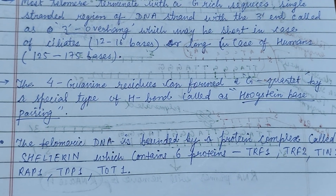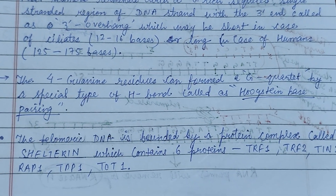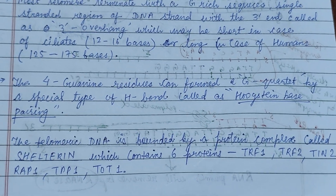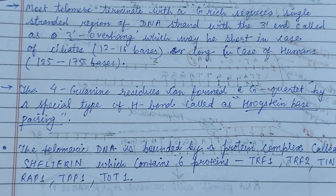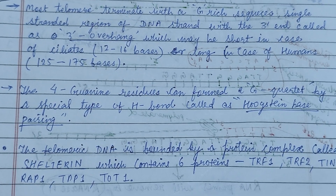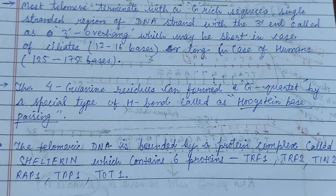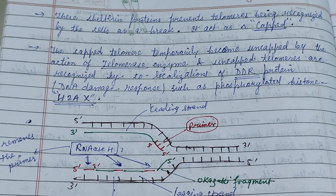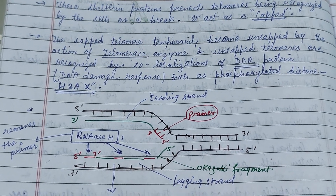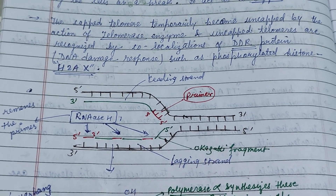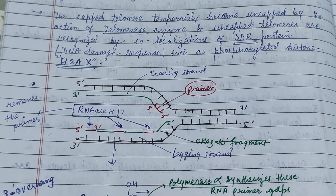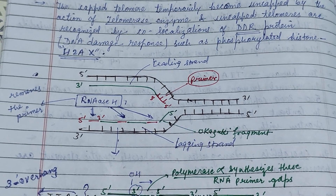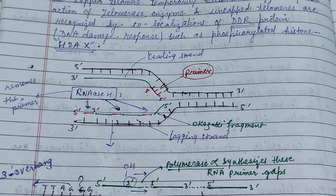Proteins such as shelterine, TRF-1, and TRF-2 are response proteins that form the complex structure of telomere DNA. The cap of the telomere temporarily becomes uncapped by the action of the telomerase enzyme, and uncapped telomeres are recognized by the localization of DDR (DNA damage response) proteins such as phosphorylated histone γH2AX.